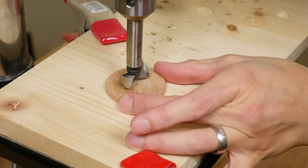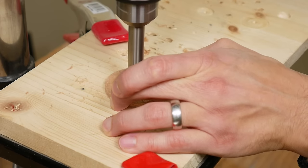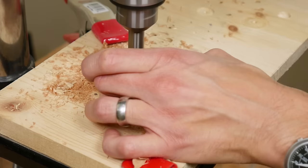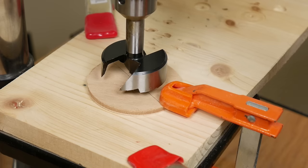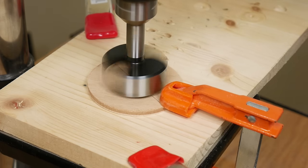I took the smallest circle and drilled a one inch hole in the center. Then took the middle sized circle and drilled a two inch hole in it.